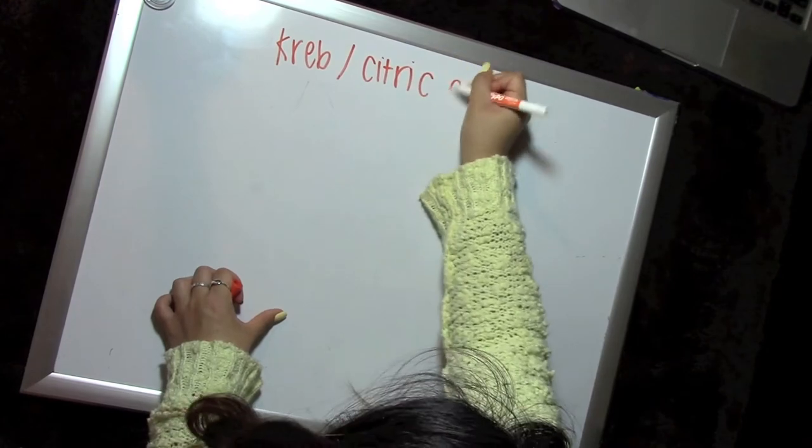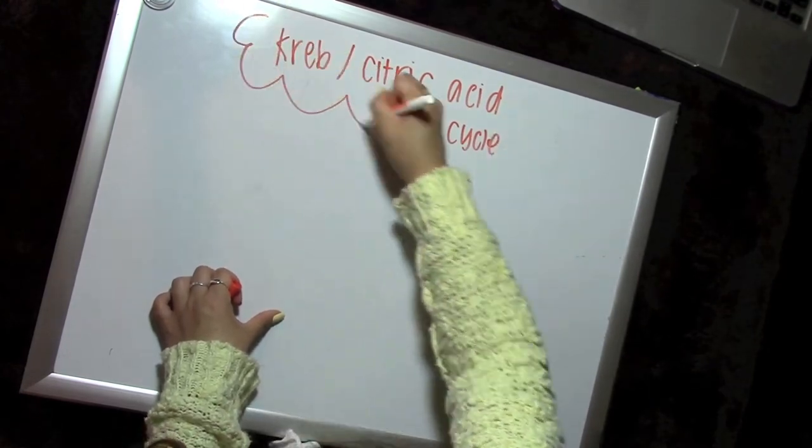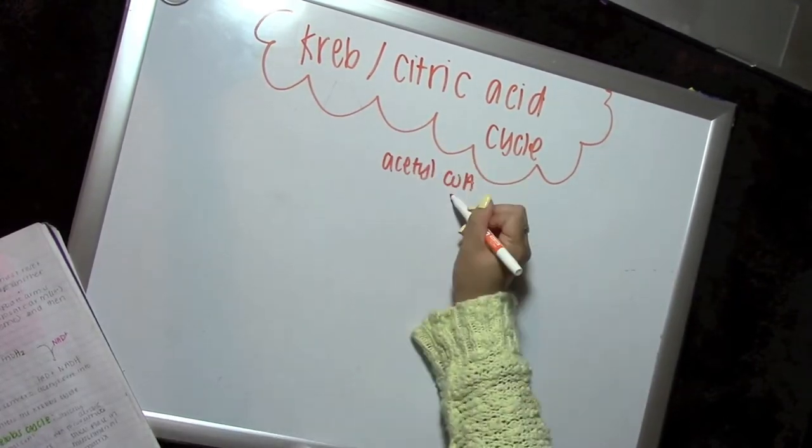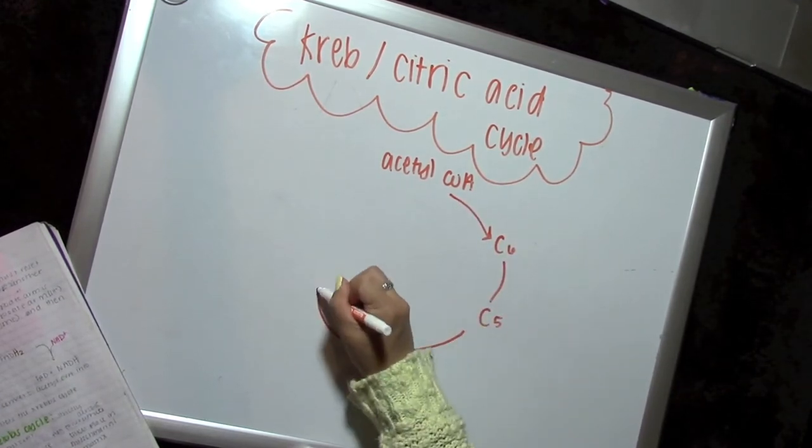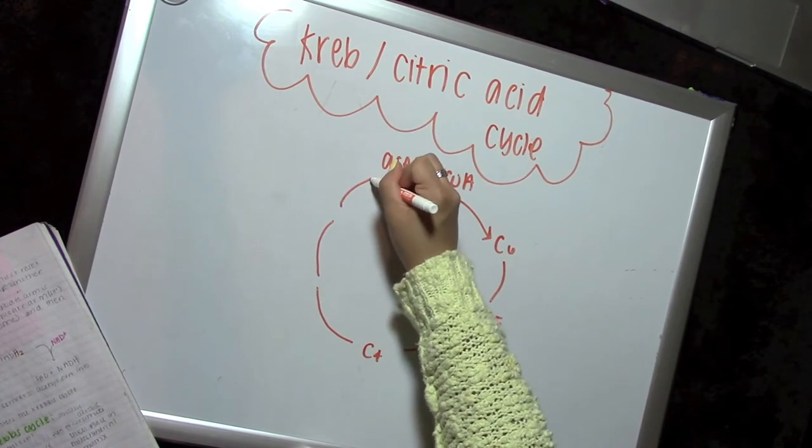The next step is the Krebs cycle, also known as the citric acid cycle. I actually really like learning about this, which is kind of why I decided to draw it out, because it's a nice circle. Everything is being recycled with every acetyl-CoA going inside.